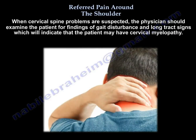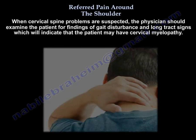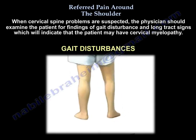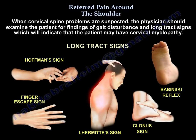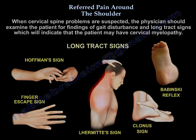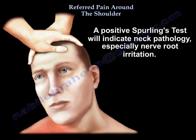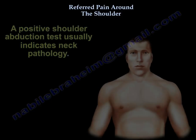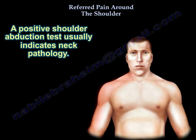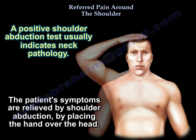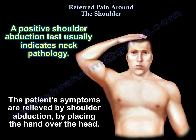When you suspect cervical spine problems, the physician should examine the patient for findings of gait disturbance and long-track signs, which will indicate the patient may have cervical myelopathy. This is a summary of some long-track signs. A positive Spurling test will indicate neck pathology, especially nerve root irritation. A positive shoulder abduction test usually indicates neck pathology — the patient's symptoms are relieved by shoulder abduction by placing the hand over the head.